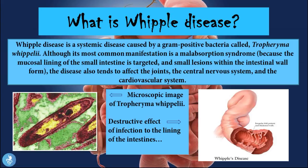If we have an active infection going on in the small intestine, the intestine is not going to be able to do its job in absorbing the nutrients from the food that we eat. So the first manifestation is usually signs of malabsorption syndrome with these patients. But this disease is special because the bacteria also tend to affect the joints, the central nervous system, and the cardiovascular system.